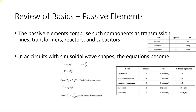Before going into system modeling we need to review the basics. We have two types of components: passive elements and active elements. Passive elements are those whose values do not vary with respect to time. In a power system, passive elements include transmission lines, transformers, reactors, and capacitors — all components that have resistance, inductance, or capacitance.